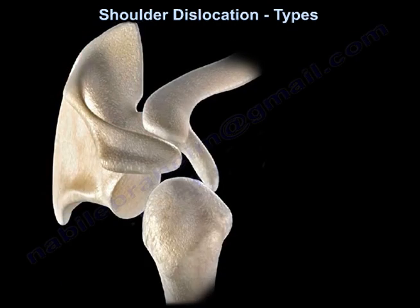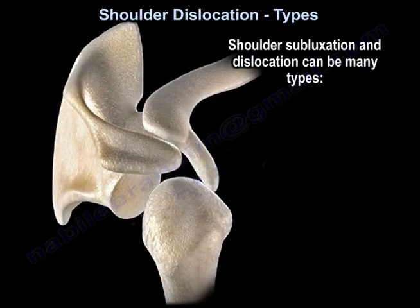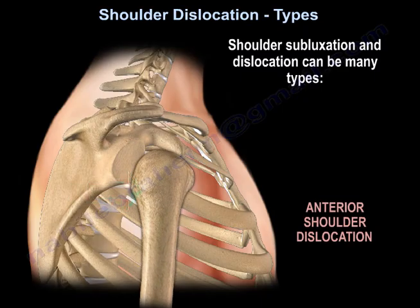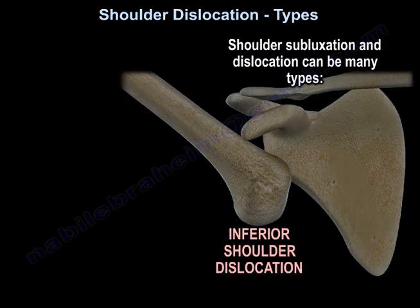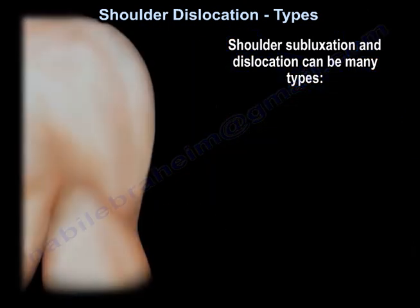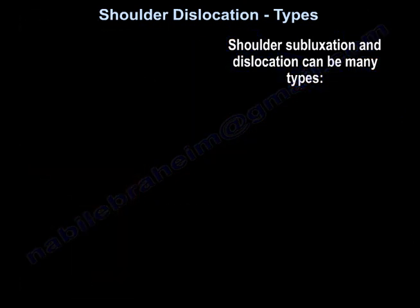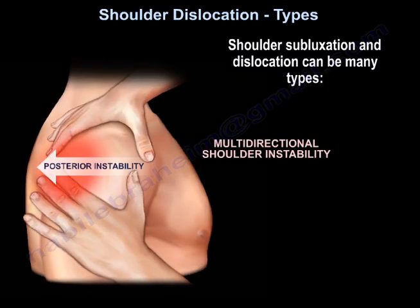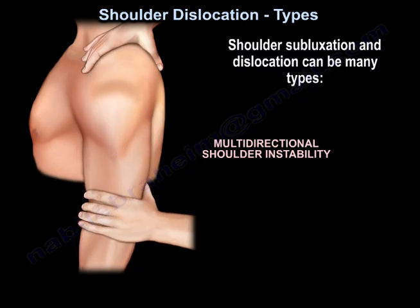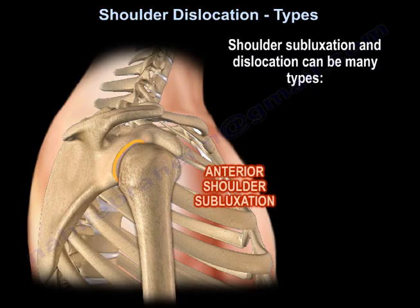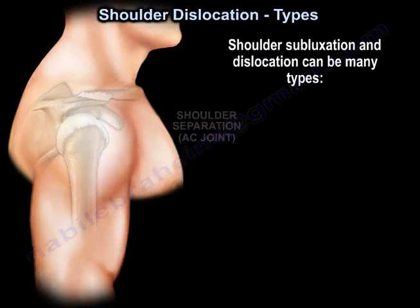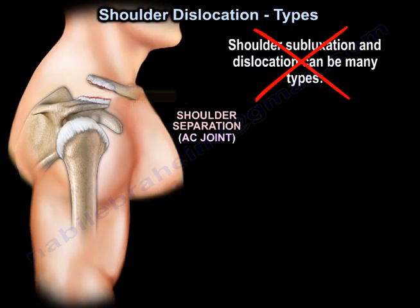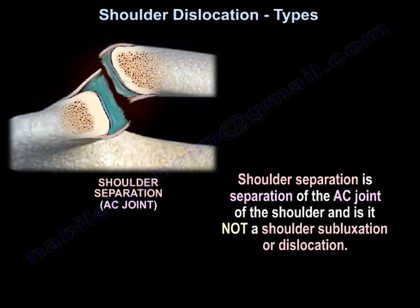Shoulder subluxation and dislocation can be many types. These include: anterior shoulder dislocation, posterior shoulder dislocation, inferior shoulder dislocation, inferior shoulder subluxation, multidirectional shoulder instability, anterior shoulder subluxation, and posterior shoulder subluxation. Shoulder separation is a separation of the AC joint of the shoulder, and it is not a shoulder subluxation or dislocation.